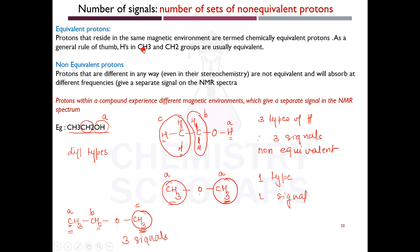Equivalent protons are those that reside in the same magnetic environment — they are chemically equivalent. All H in CH3 groups are the same, all H in CH2 groups are the same. If the environment is also the same, those are equivalent. Protons that are different in any way, even in stereochemistry, are non-equivalent protons and they will absorb at different frequencies, giving separate signals on NMR.